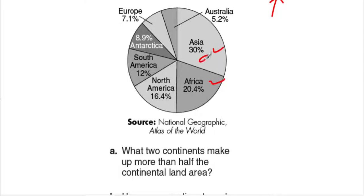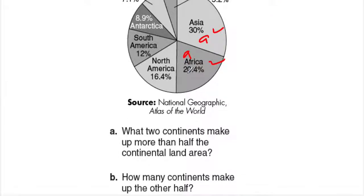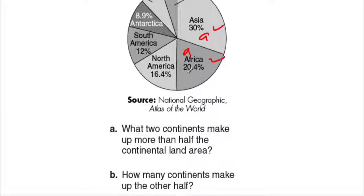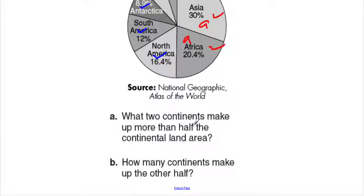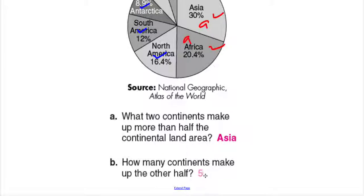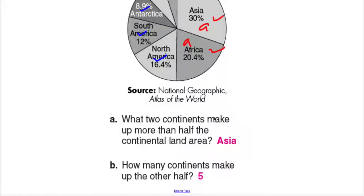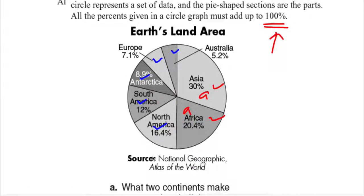For the next question: how many continents make up the other half? What remains would be Australia, Europe, Antarctica, South America, and North America — that is five continents. So the answer is five. Asia and Africa make up more than half, and the other half is represented by those five continents.